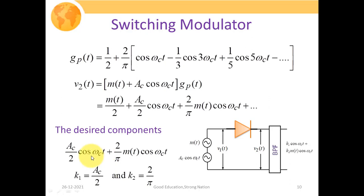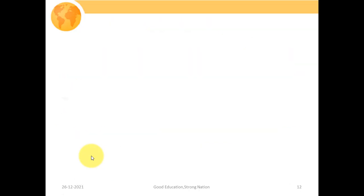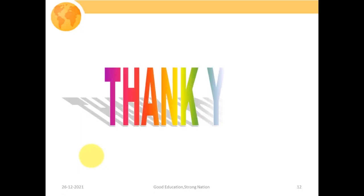Hopefully you have gained insight into how these two mechanisms generate the traditional AM signal. In case of any doubt, you can ask in the comment section and I'll try to resolve them as soon as possible. Thank you very much.